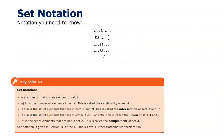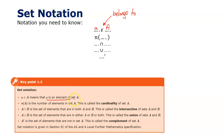Now I want to cover the set notation you need to know. We write 'a is an element of set A' using the element symbol, meaning a belongs to that set. N(A) denotes the number of elements inside set A — for example, the number of prime numbers less than 100, which you could calculate and write down. You've probably seen this notation at GCSE for probability.